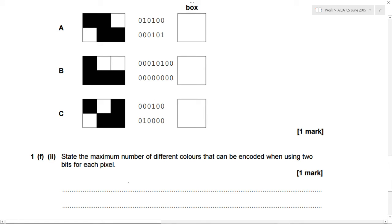So if we've got two bits to play with, the way to work this out: you've got your number of bits, which is two, and then you do that to the power of two, which means two squared equals four.